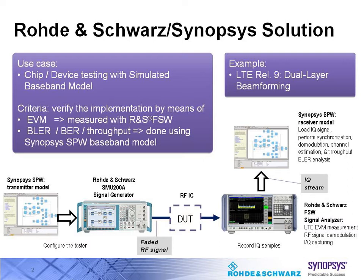The Rohde & Schwarz SMU 200 vector signal generator generates a standard-compliant LTE release 9 downlink signal. Settings can be given manually or derived from Synopsys SPW. Fading and noise are then added, and the upconverted signal is fed into a device under test such as an RF IC.